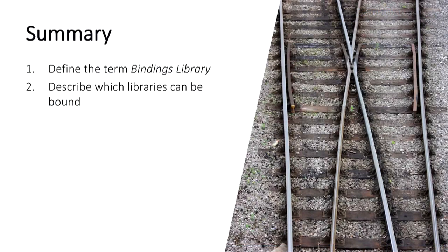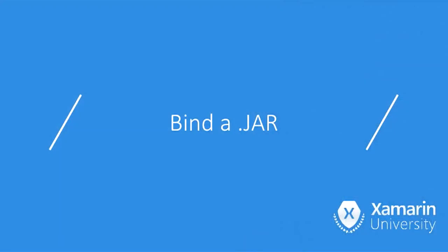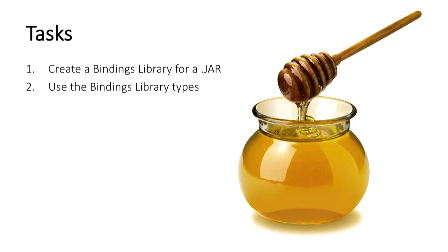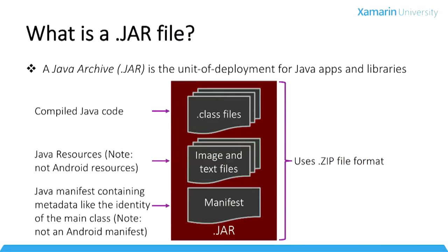In this first part we set things up: we discussed what a bindings library is, talked briefly about how it's implemented, and the limitations like what types of jar files the Xamarin tooling works with. Now we'll see how to bind a jar file. This is the formal definition: inside a jar file you're going to have the compiled Java code — dot class files in the Java bytecode format — and then perhaps some image and text files, which the Java community calls resources.